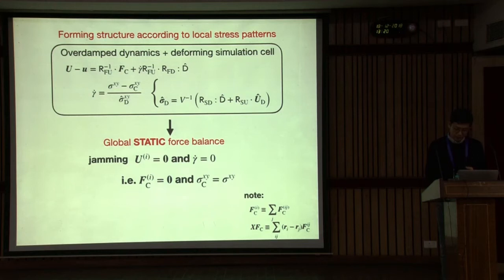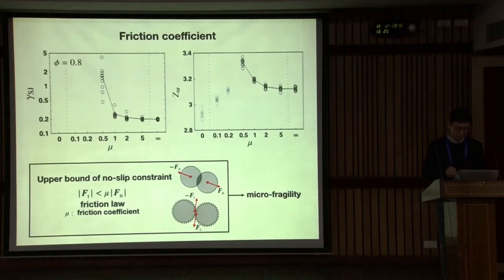I'll just show you some parameter dependence. So far, I just showed infinite friction coefficient here. But of course, friction coefficient may change the result quantitatively. This is actually upper bound of no-slip constraint. This means this can be considered as a microscopic or minimum fragility, minimal component of fragility. If you change the direction of force between two particles, they separate. This means this is a minimum unit of the fragility.